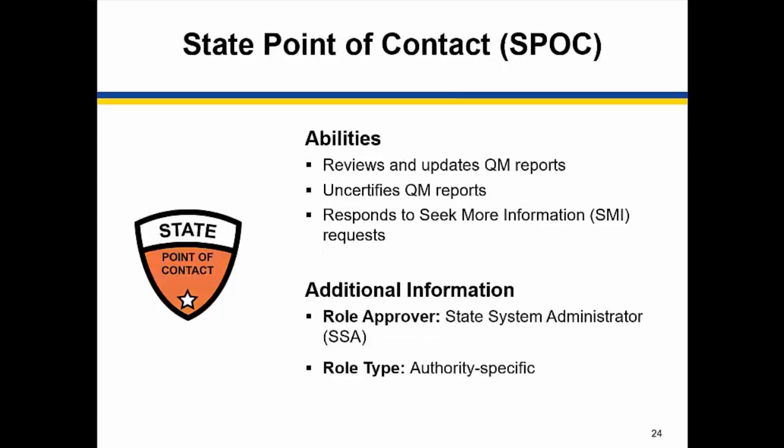Next is the state point of contact, or SPOC. The state point of contact reviews and updates quality measure reports, and receives and responds to SMI requests. Requests for this role are routed to the state system administrator for approval. Like the state editor, this role is authority specific. For example, if you would like to be an SPOC for health home quality measures along with adult quality measures, you will need to request the role twice, once for each respective authority.